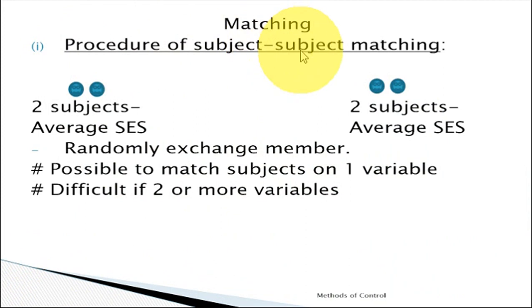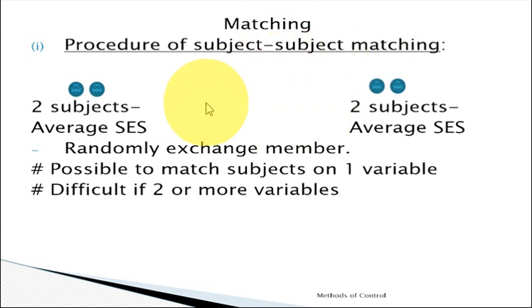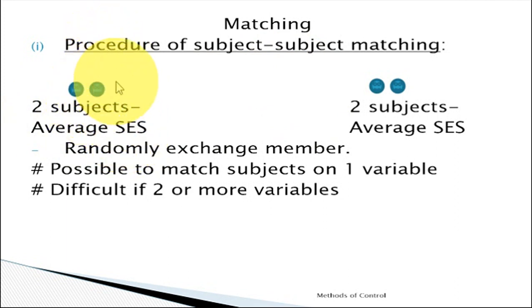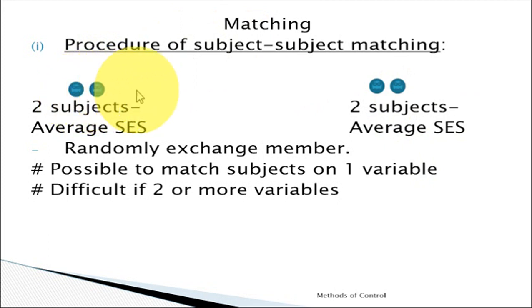Number one is the procedure of subject-to-subject matching. We identify an extraneous variable which may affect the experimental research — for example, socio-economic status. We match two subjects from the same socio-economic status, then put one in the experimental group and the other in the control group. We continue selecting pairs from the same average socio-economic status and randomly assign one to the control group and one to the experimental group. This is widely used as a procedure for controlling extraneous variables.